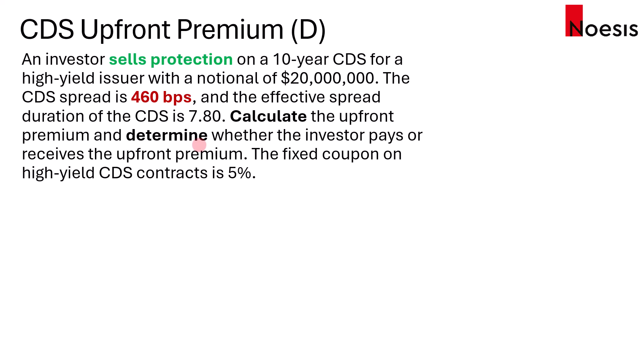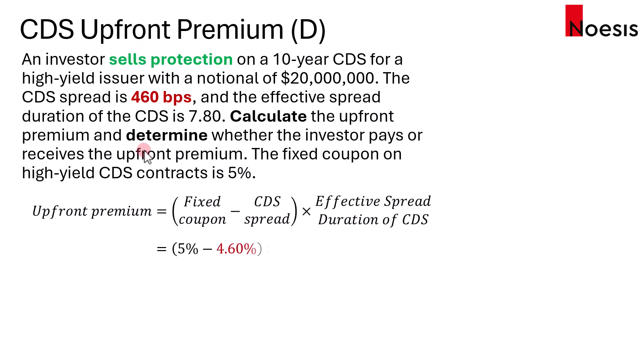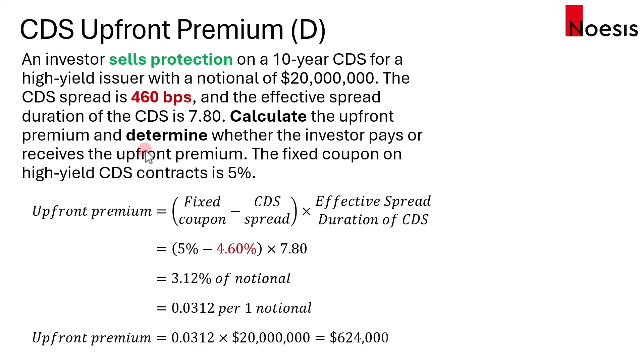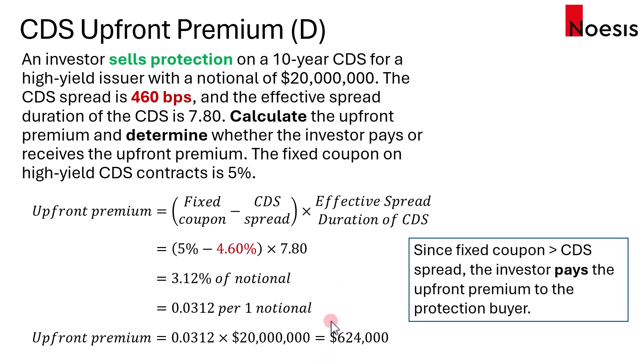Now let's change the question so that the investor is selling protection on the same contract with the same notional, and the CDS spread is 460 basis points. The upfront premium is still $624,000, but now the investor is the protection seller. Because the protection buyer pays a higher premium than the risk they're exposed to at 4.6%, it's not fair for the protection buyer. So the protection buyer must receive an upfront premium, meaning the investor as protection seller would have to pay the upfront premium to the protection buyer.